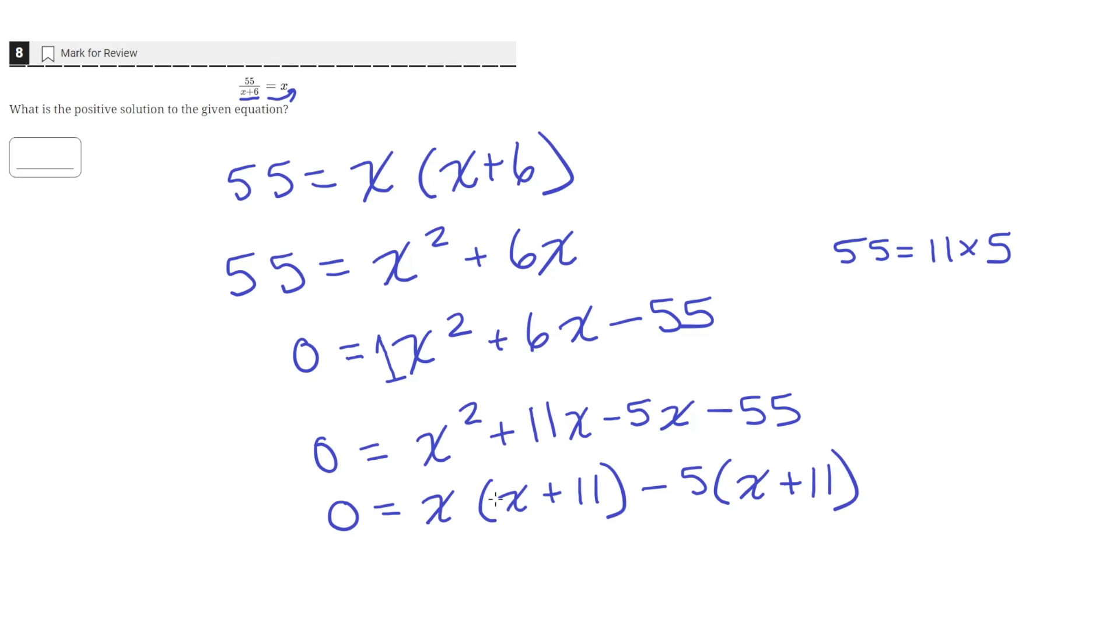So now we see that the quantity x plus 11 is common to both, so we can factor that out as well. And we see that x plus 11 quantity times x minus 5 is the factored form of this equation here.